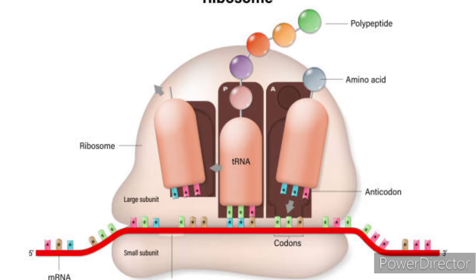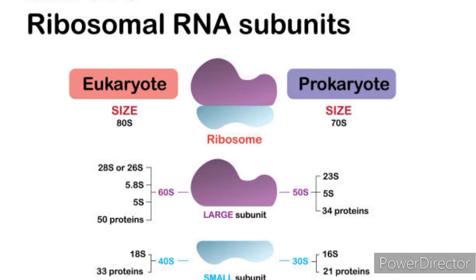Ribosome Composition: Ribosomes are made up of two major components — ribosomal RNA (rRNA) and proteins. The small and large subunits consist of a combination of ribosomal RNA molecules and various ribosomal proteins.